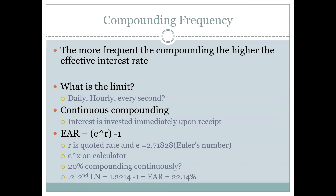How much compounding can we have? It's clear that the more frequent the compounding, the higher the effective rate and the higher the future value is going to be — either the more interest you're going to be charged or the more money you're going to earn on your investment. Is there some limit? We talked about daily, we could go hourly, we could go every second, or we could do what's called continuous compounding. This used to be fairly common and is still common in some kinds of advanced financial contracts. If you take investments or options classes later, you'll talk about continuous compounding, which means interest is compounded every single instant — an infinite number of compounding periods.